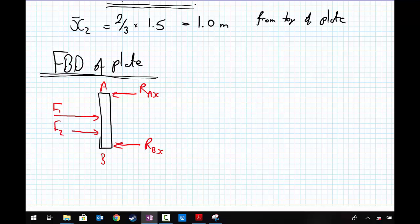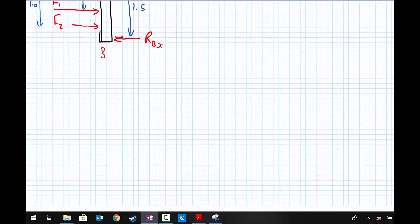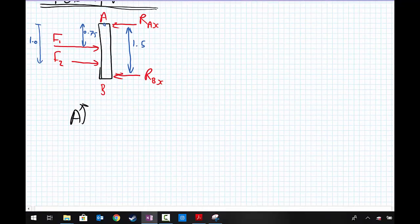We label up those dimensions that we need to know. This is 0.75, this distance is 1, and the total distance is 1.5. First, I'm going to take moments about A, the top of the plate, where I've measured the centroids from. Taking moments about A, just about to keep the free body diagram on the page.